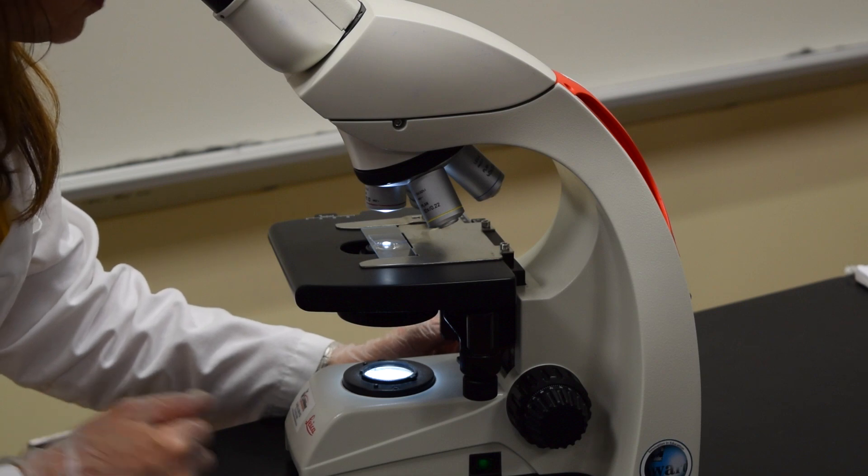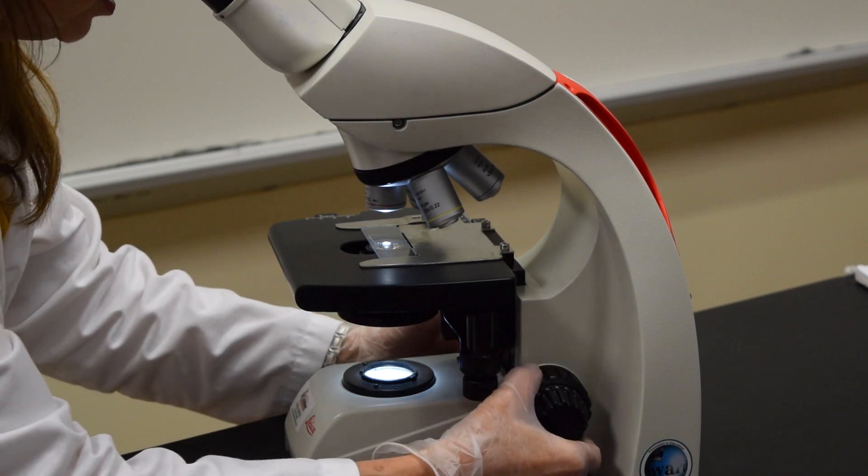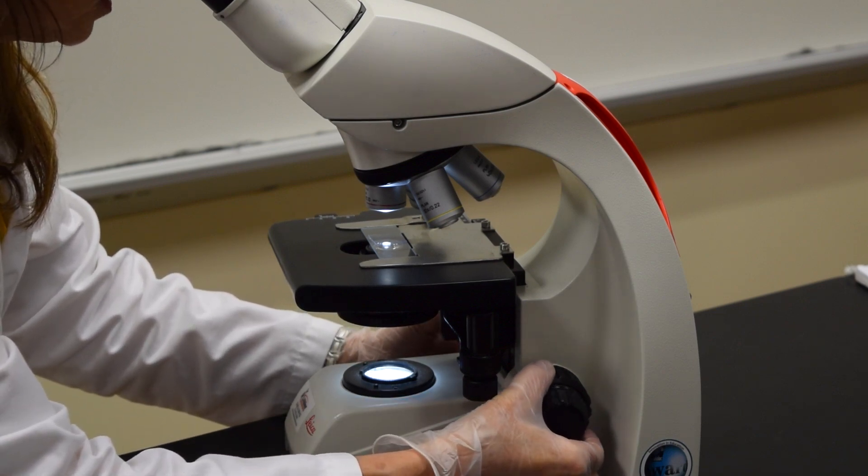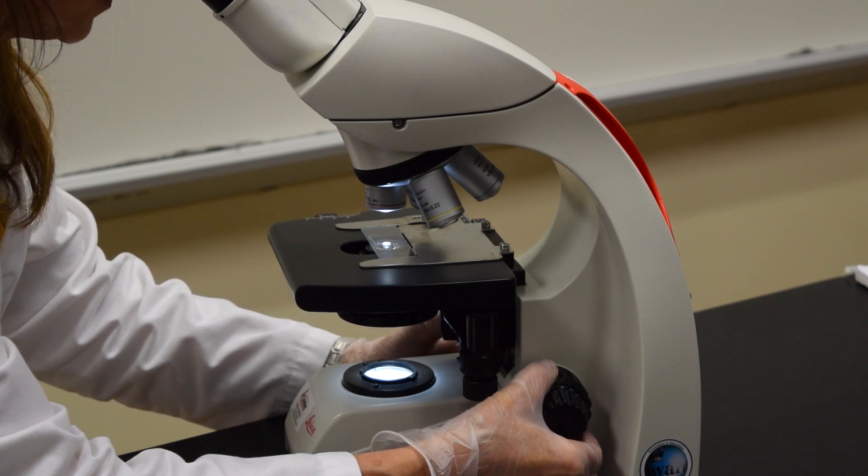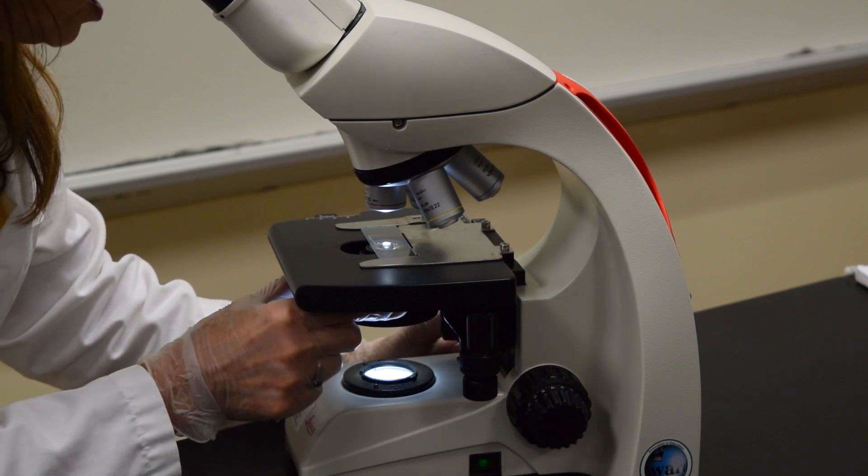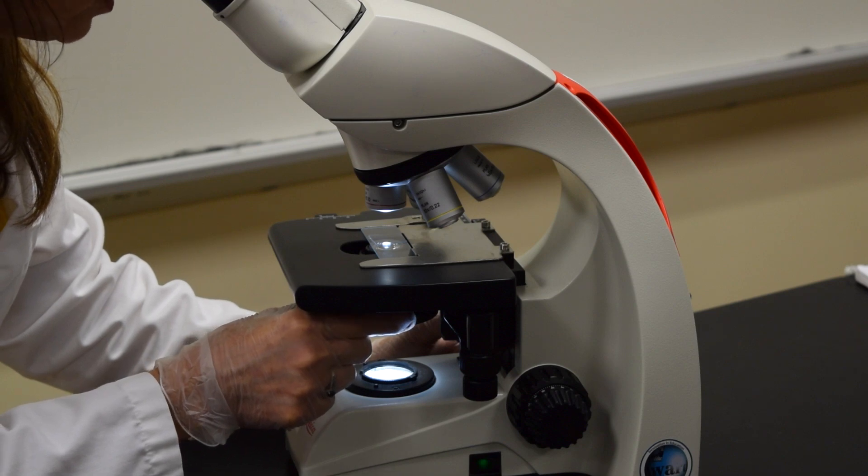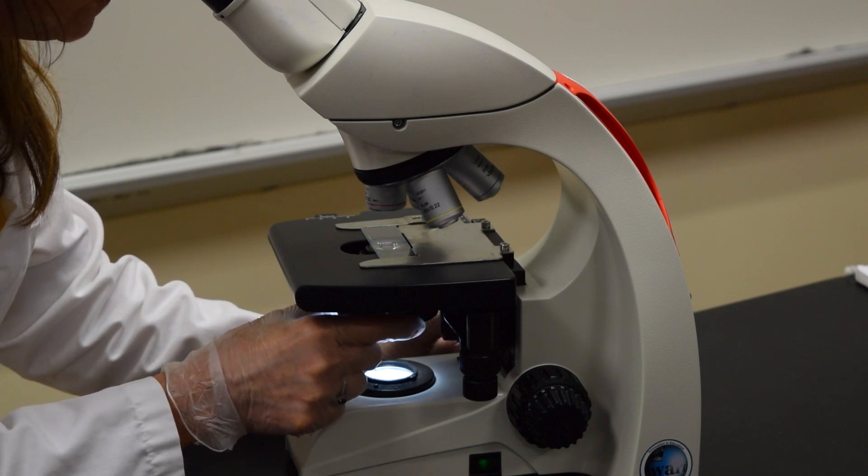Take a look under the microscope. Use the coarse adjustment knob to get the edge of the cover slip in focus. You should dim the light. To dim the light going through the object, you're going to use the diaphragm.